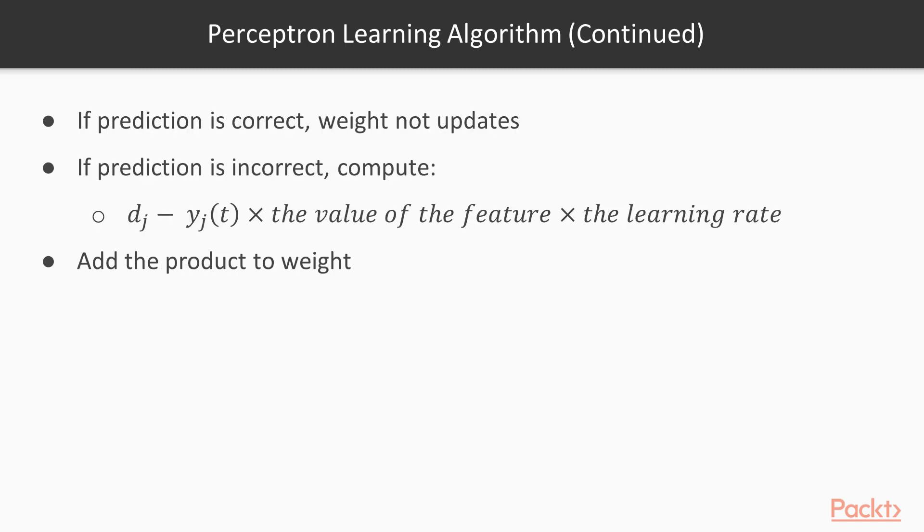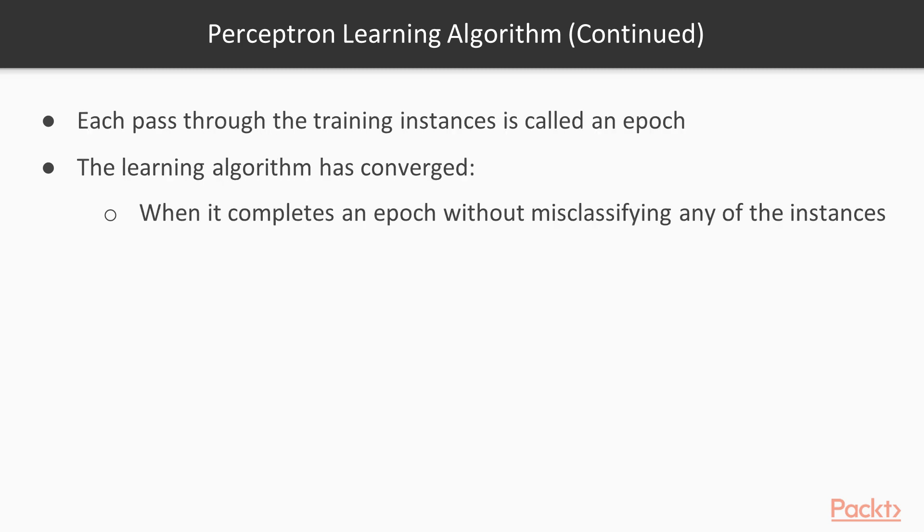That is, if the prediction is correct, the weight is not updated. If the prediction is incorrect, we compute the product of dj minus yj t, the value of the feature and the learning rate. We then add the product, which may be negative, to the weight. Each pass through the training instance is called an epoch. The learning algorithm has converged when it completes an epoch without misclassifying any of the instances.